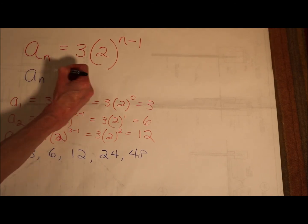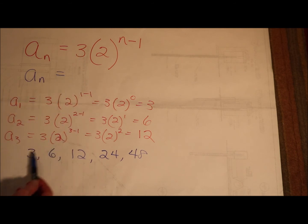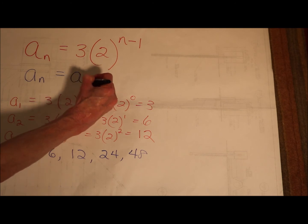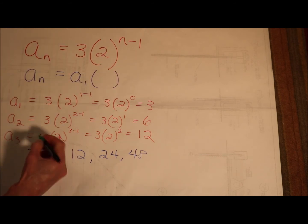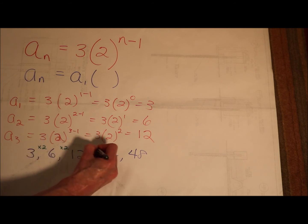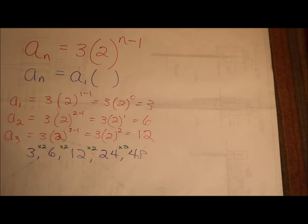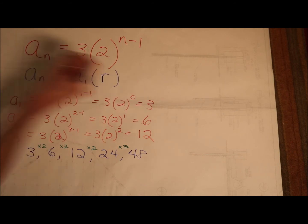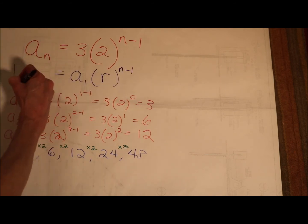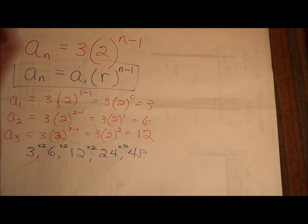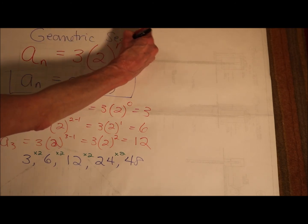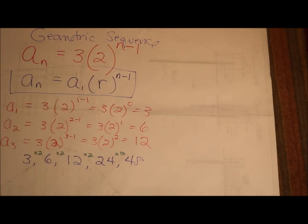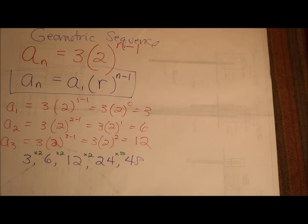Let's break down the pieces. The nth term is 3 — that's our first term, a sub 1 — times 2, which is the common ratio: the thing I'm multiplying by over and over. We use r for the common ratio, raised to the n minus 1. There's the general form for a geometric sequence. This is one way to write an equation; there's actually an infinite number of ways, but we'll get to that a little later.